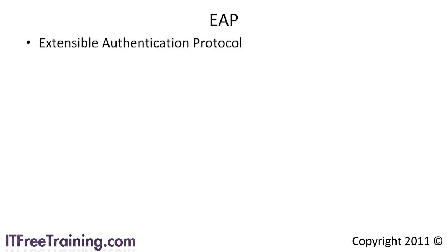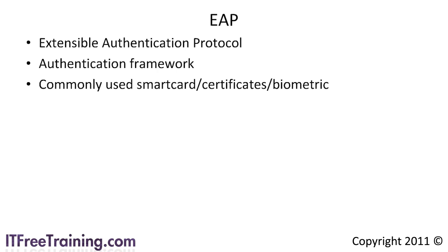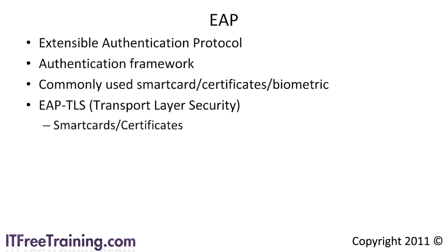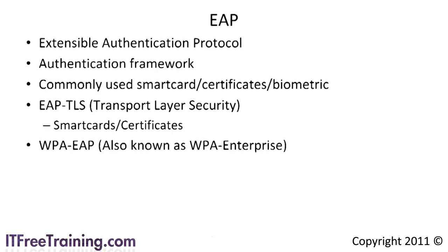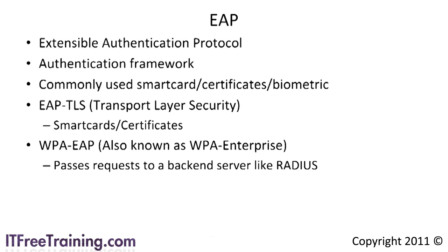EAP, or Extensible Authentication Protocol, is not an authentication mechanism by itself but an authentication framework. There are currently about 40 different protocols that bolt on to EAP. Since EAP is extendable, developers are free to add custom authentication methods. EAP is commonly used for smart cards, certificates, and biometric devices such as fingerprint scanners. One of the more commonly used implementations is EAP-TLS. TLS stands for Transport Layer Security and is the next generation of SSL. It is commonly used for smart cards and certificates. If you are using wireless, you may come across WPA EAP, otherwise known as WPA Enterprise, which passes authentication requests to a back-end server such as RADIUS.